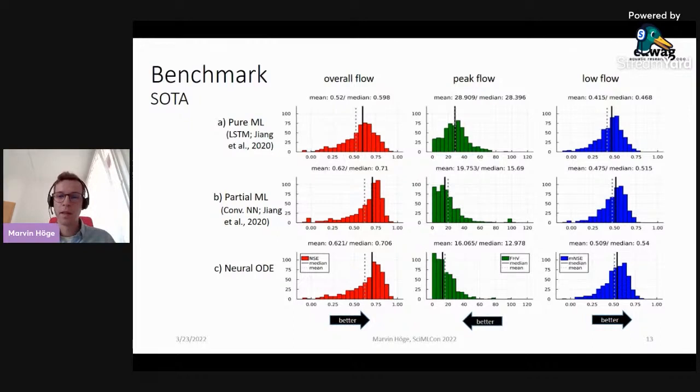Here in this task, the convolutional neural network performs already better in all metrics. And then our neural ODE model shows similar results to that for overall flow, as you can see in the lower left in red, but it shows again an improvement over the other models when it comes to peak and low flow in specific.